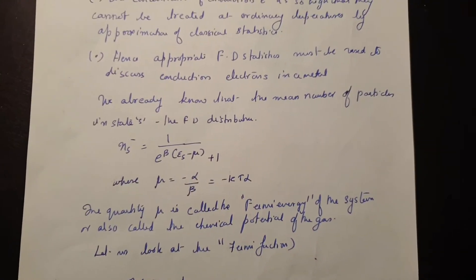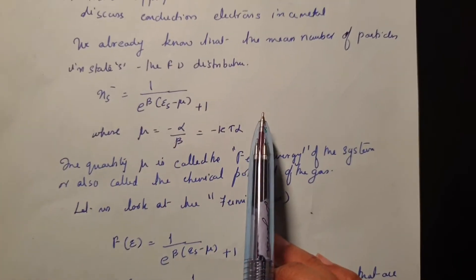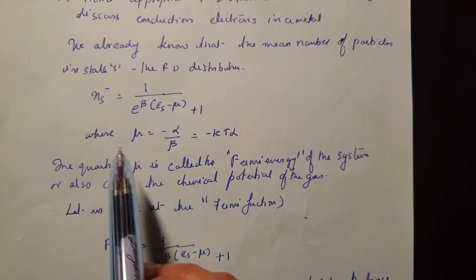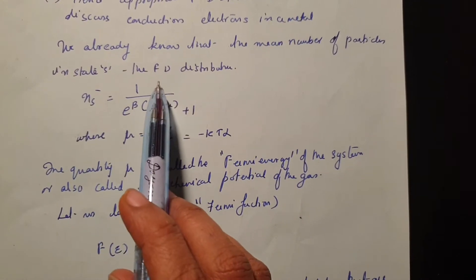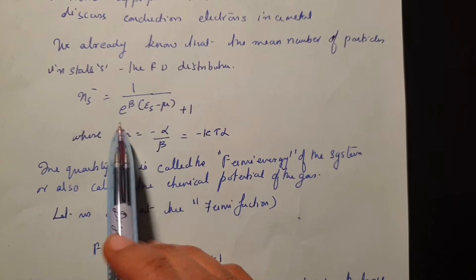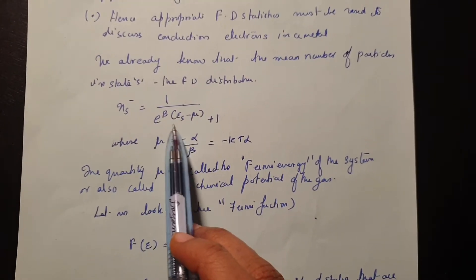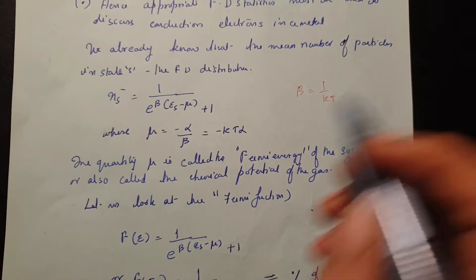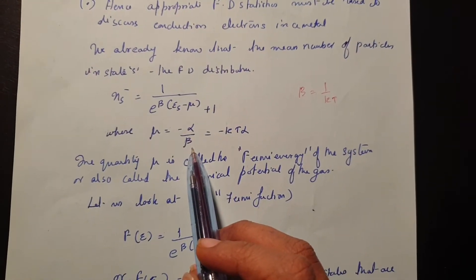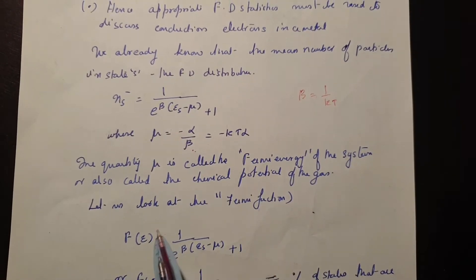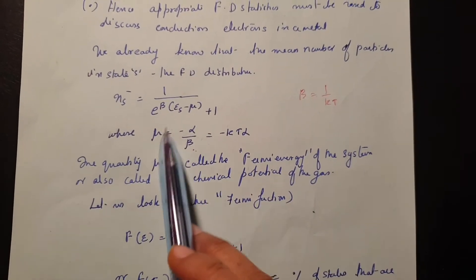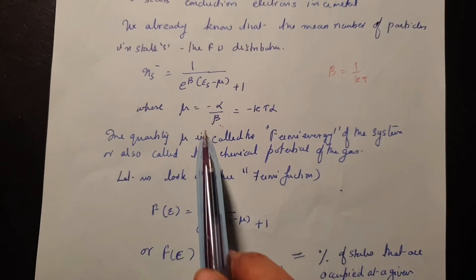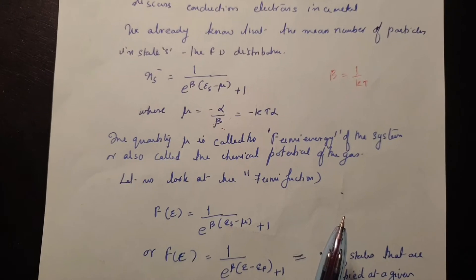As we have discussed, we derived the Fermi-Dirac distribution: the number of electrons in a particular state for FD statistics is 1 divided by (e raised to β(εs − μ) + 1). Here β = 1/kT and μ = −α/β = −kT·α. This quantity μ is also called the Fermi energy of the system, or chemical potential.